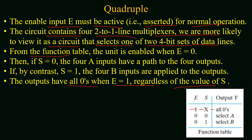From the function table, the unit is enabled when E equals 0. If S equals 0, the four A inputs have a path to the four outputs, and if S equals 1 the four B inputs are applied to the output.